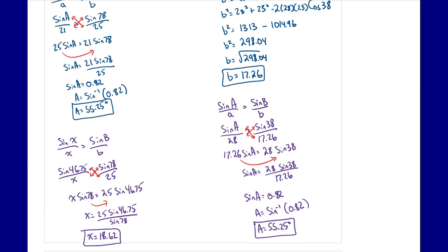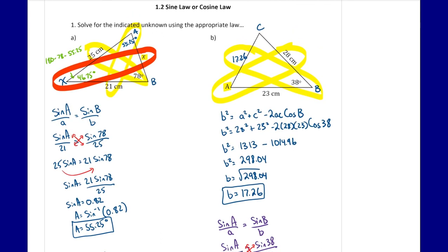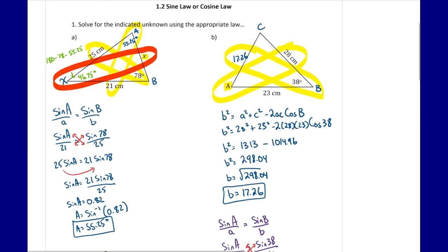So we might have to use one law to find other pieces of information first, and then use either the same law or another law to find the indicated piece. It might not be as simple as one calculation — it can be a multi-step process.